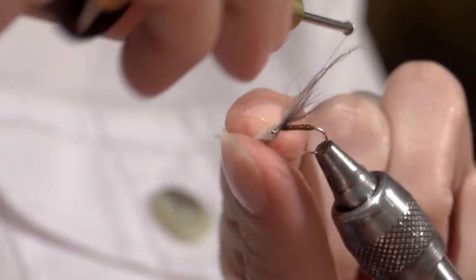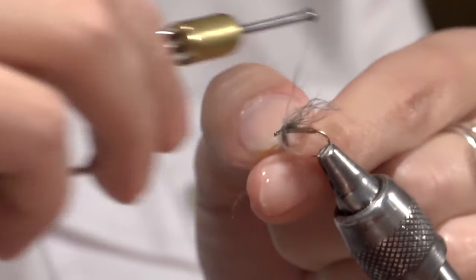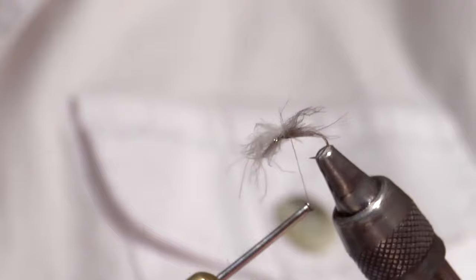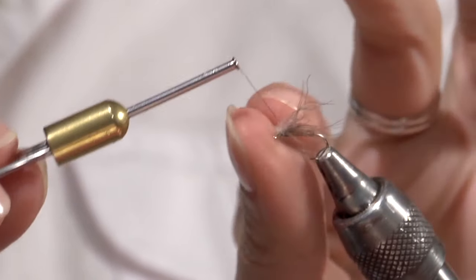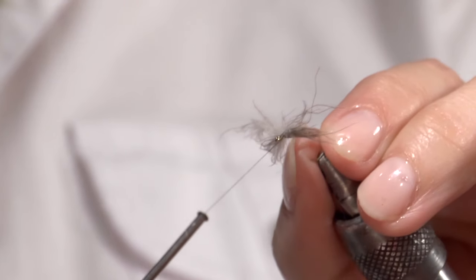And for that you want to come in a section, a figure eight. So you come around each side of the wing in a figure eight. And it splits them out nice and even. Keep your thread taut.